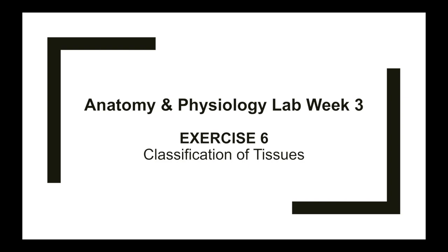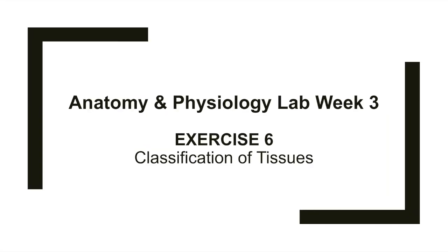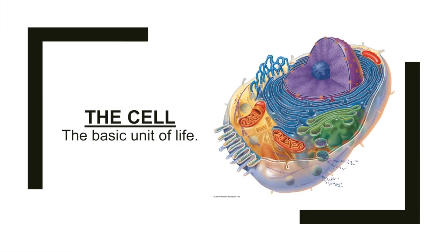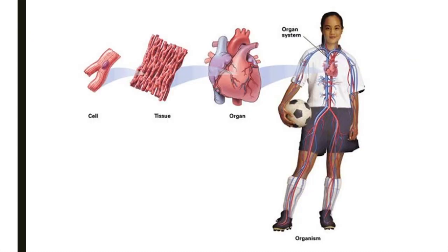Hey guys and welcome to week 3 of Anatomy & Physiology Lab. This week we'll be covering Exercise 6, Classification of Tissues. Last week we spent time reviewing the basic unit of life, the cell. From DNA to ATP synthesis, there's a lot taking place within each cell in our body. Cells aren't only operating as individual units, but are working together to perform specific functions. Cells that are similar in structure and function group together to form tissues.